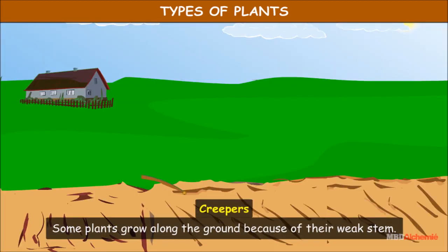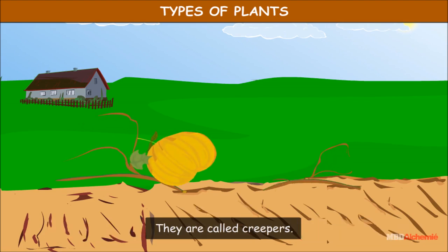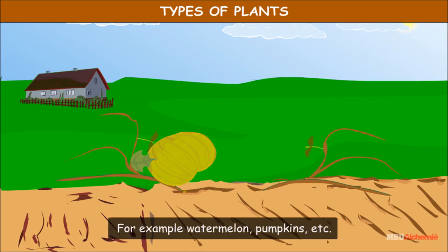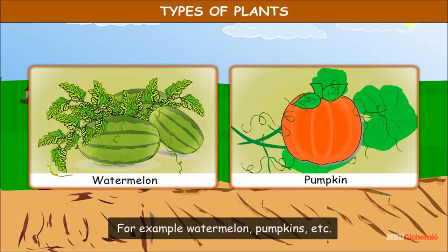Some plants grow along the ground because of their weak stem. They are called creepers. For example, watermelon, pumpkins, etc.